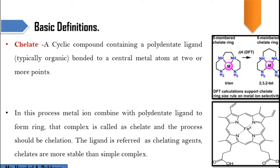The ligand in this process is called the chelating agent. Chelates are more stable compared to simple coordination complexes because they contain a ring, and due to the formation of that ring they achieve greater stability. Chelates differ from simple coordination compounds in that simple coordination compounds are formed by the reaction of a metal with a monodentate ligand, whereas chelates are formed by the reaction of a metal with a polydentate ligand. When the polydentate ligand donates electrons, a ring forms, and that coordination complex is the chelate.